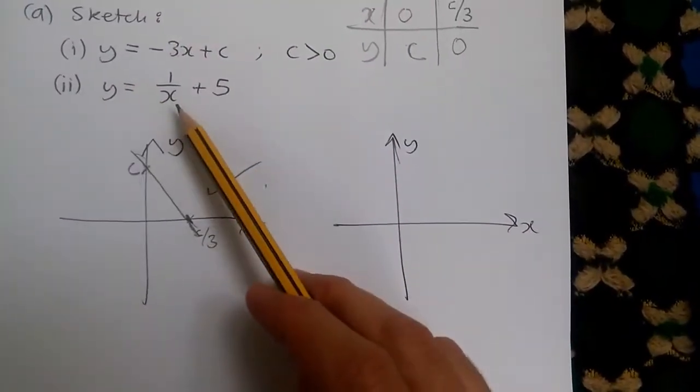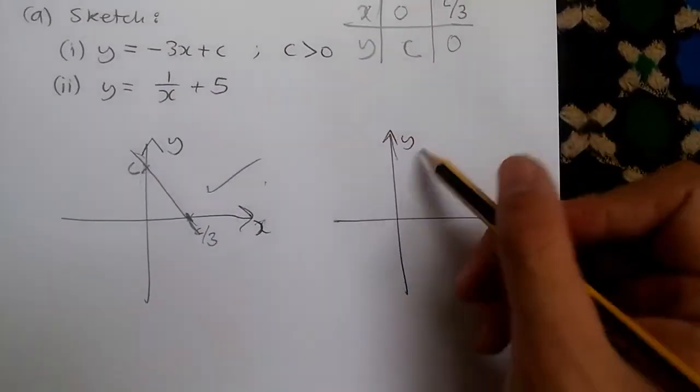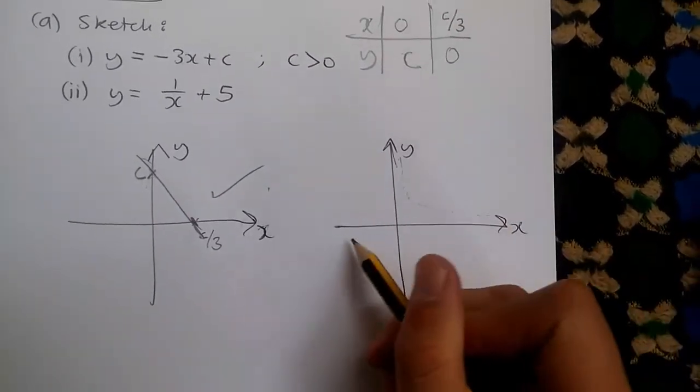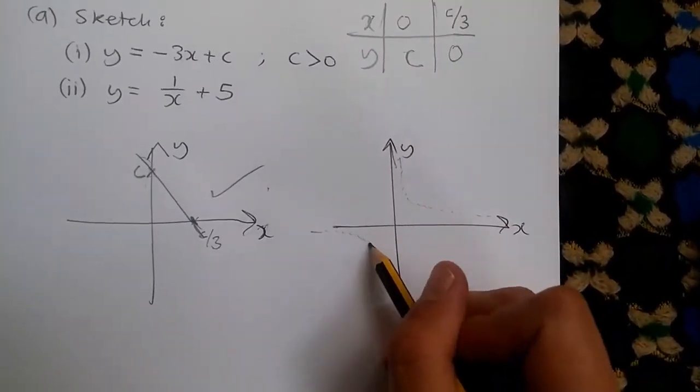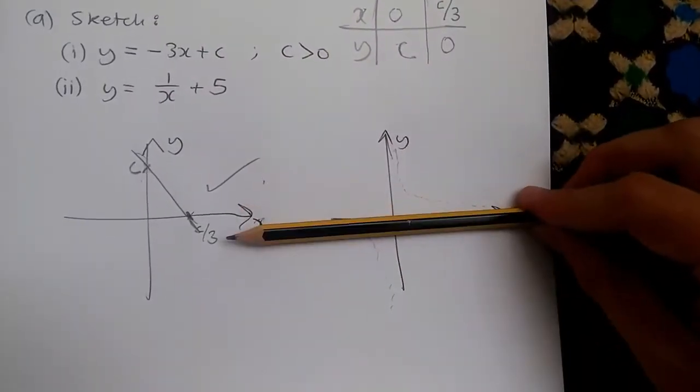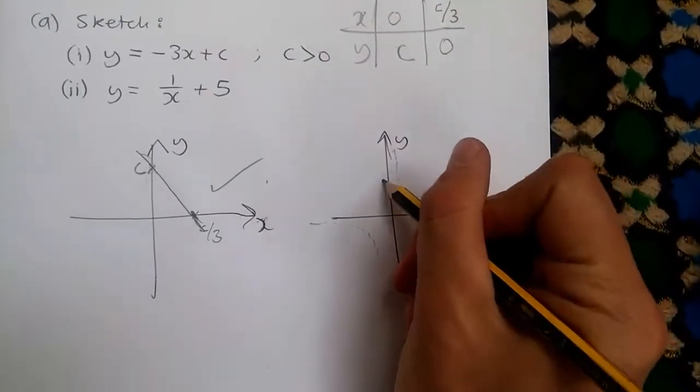Now for this one, this is just a case of drawing 1 over x and raising it up 5 levels. So suppose this was a typical inverse graph, which is 1 over x. To raise it 5 levels higher, we just have to think of the asymptote to be somewhere here. Suppose the asymptote is over here, let's call this one 5.